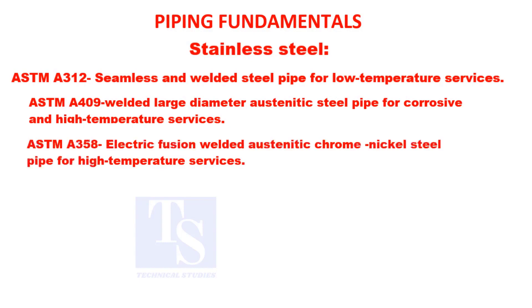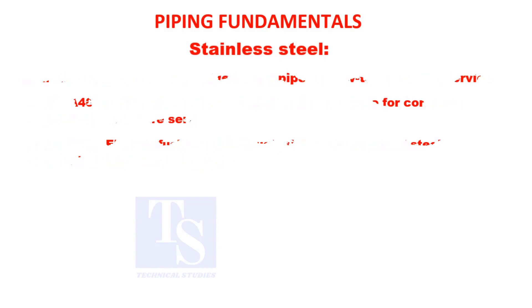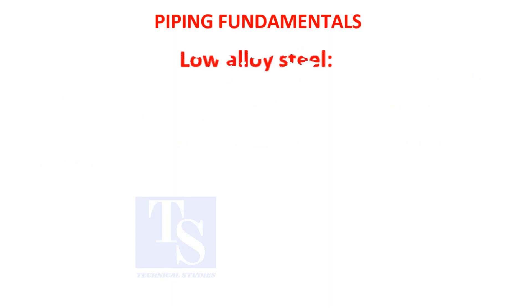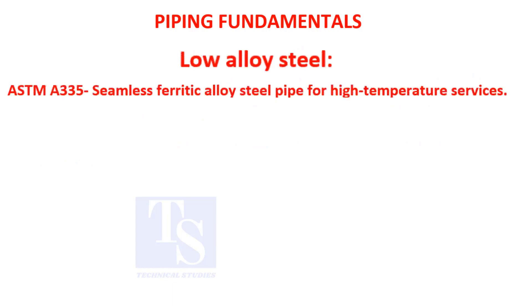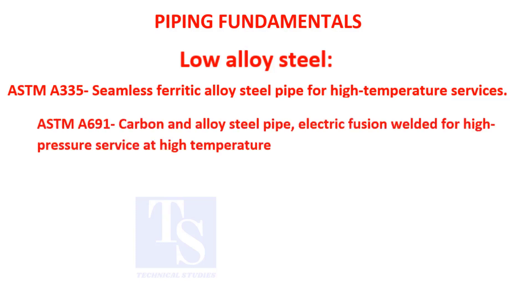ASTM A-691: carbon and alloy steel pipe, electric fusion welded. ASTM A-358: electric fusion welded, austenitic chrome nickel steel pipe for high temperature services. ASTM A-691: carbon and alloy steel pipe for low temperature.